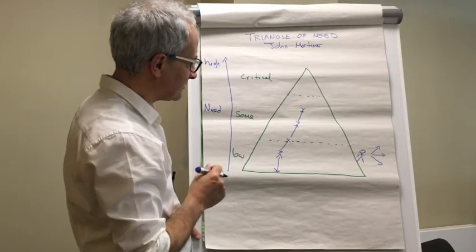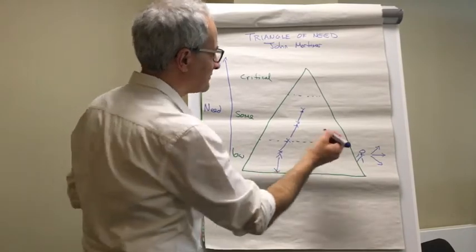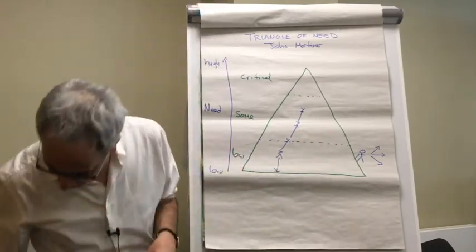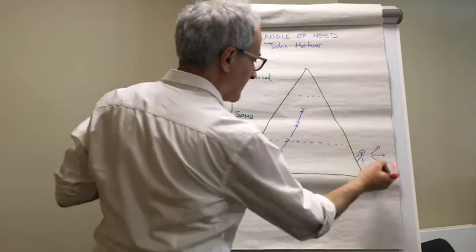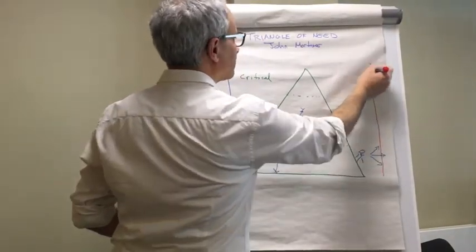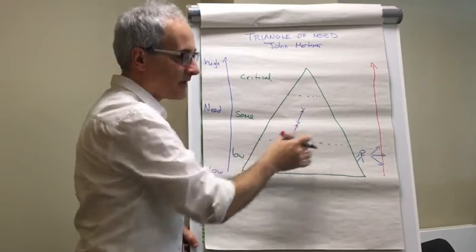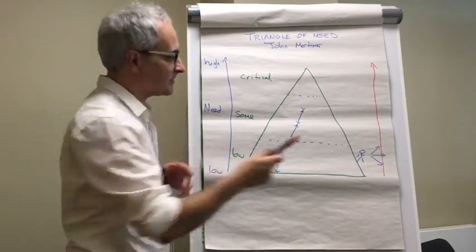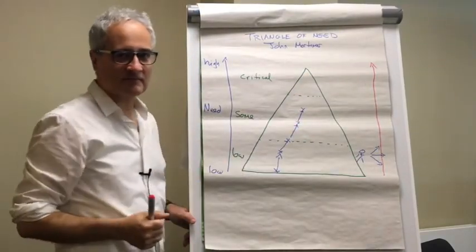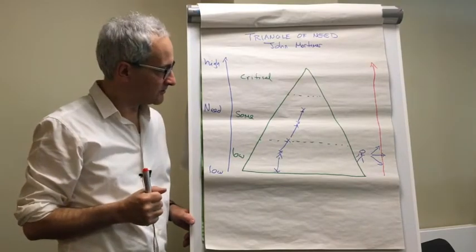So that's what we found with the triangle of need. In terms of resource, the amount of resource that's needed to help that person go down increases the further up the triangle of need that you go.